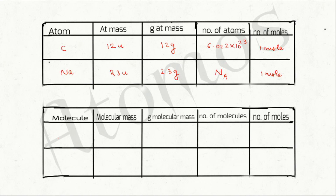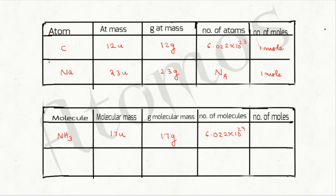For molecules — take one molecule of ammonia: nitrogen is 14 units and hydrogen is 1 unit, so the molecular mass is 17 units. The gram molecular mass is 17 grams. Taking 17 grams of ammonia gives Avogadro's number of molecules — 6.022 × 10²³ molecules — which equals one mole. So one mole of ammonia weighs 17 grams.